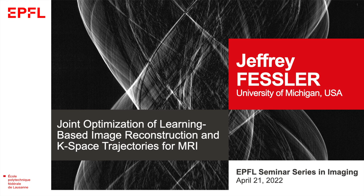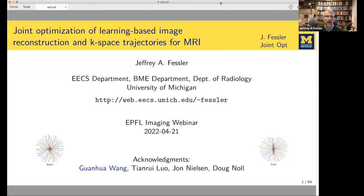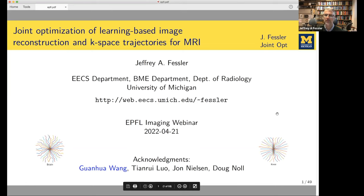Thank you so much for inviting me to be part of this series. I'm really impressed with the set of people in your past and future speakers, and I'm honored to be part of that august group. I've had the privilege of working with a lot of terrific PhD students at Michigan, and today I want to talk about this joint optimization work. It's been very recently accepted in Transactions on Medical Imaging. This is really the work of Guan Hua Wang, a PhD student I co-advised with Doug Knoll, and these pictures here are a preview of the case-based trajectories I'll be talking about.